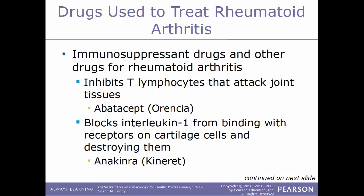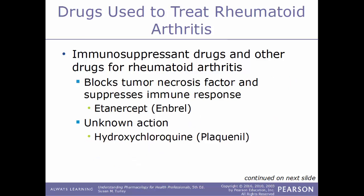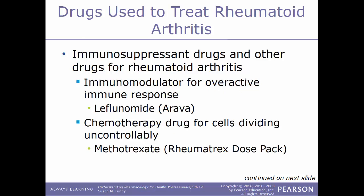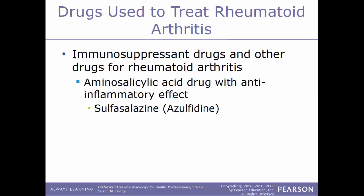Some drugs inhibit T lymphocytes that attack joint tissues — an example is abatacept sold as Orencia. Some drugs block interleukin-1 from binding with receptors on cartilage cells — an example is anakinra sold as Kineret. Some block tumor necrosis factor and suppress the immune response — an example is etanercept known as Enbrel. Some have an unknown mechanism — an example is hydroxychloroquine sold as Plaquenil. Some are immunomodulators for an overactive immune response — leflunomide sold as Arava. Some are chemotherapy drugs — methotrexate sold as Rheumatrex Dose Pack. Others are aminosalicylic acid drugs with anti-inflammatory effects — sulfasalazine better known as Azulfidine.